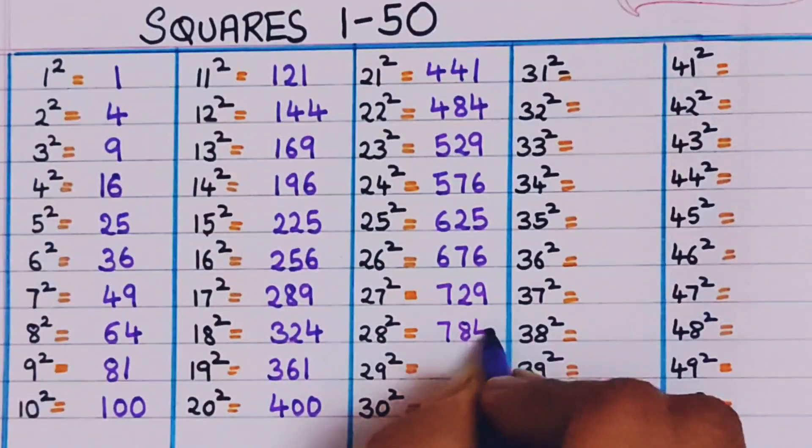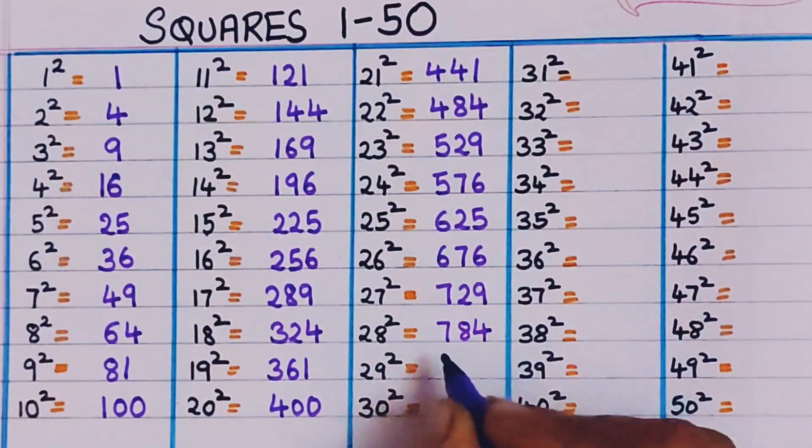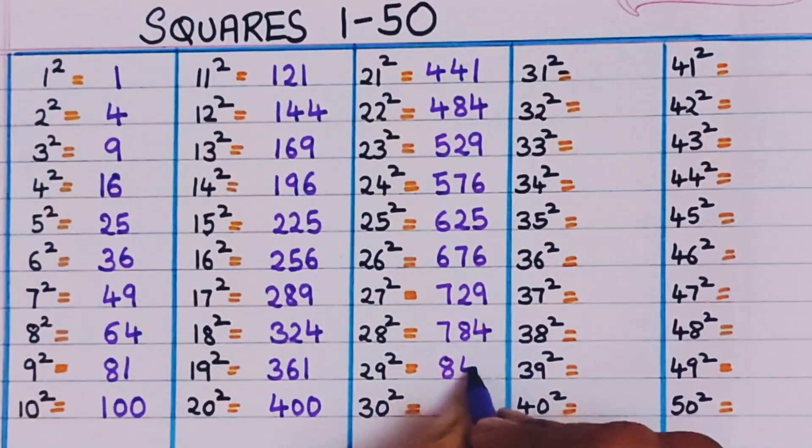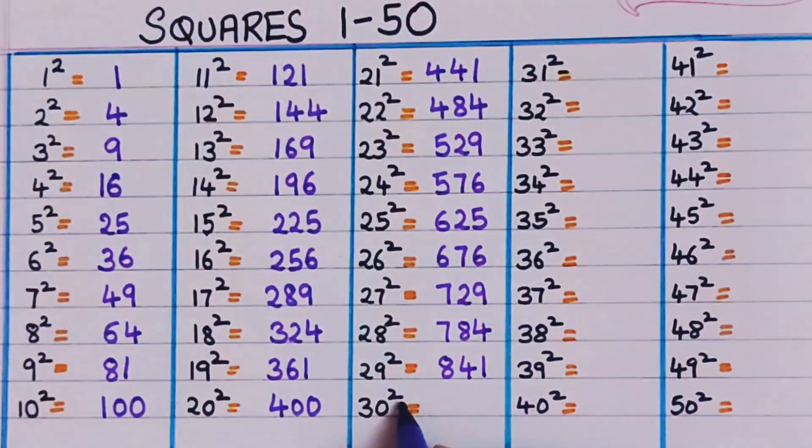28 square, 784. 29 square, 841. 30 square, 900.